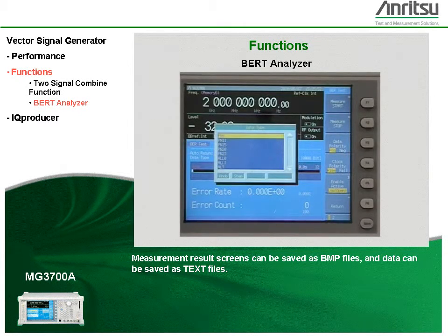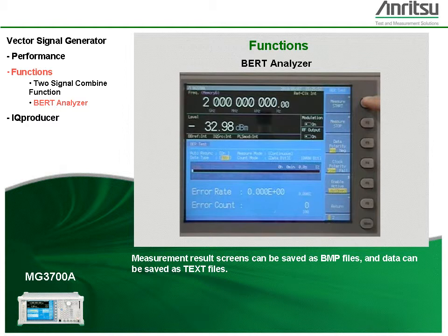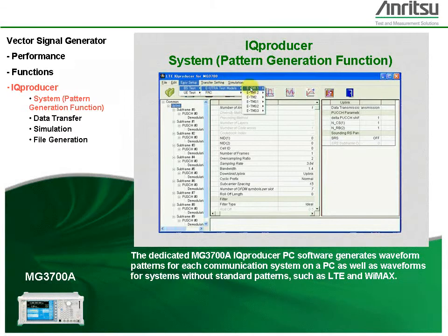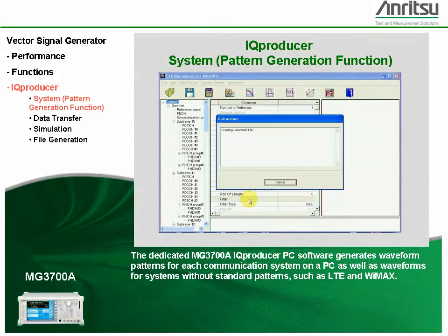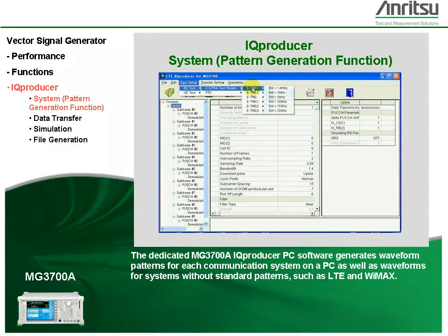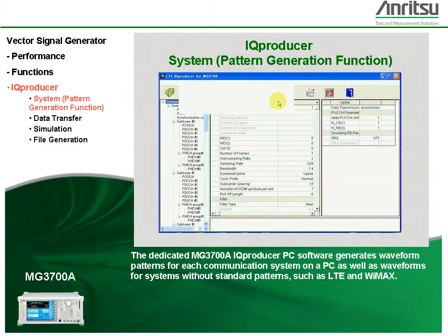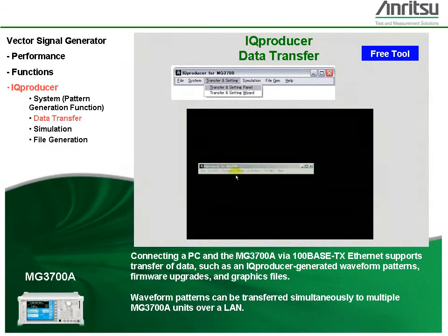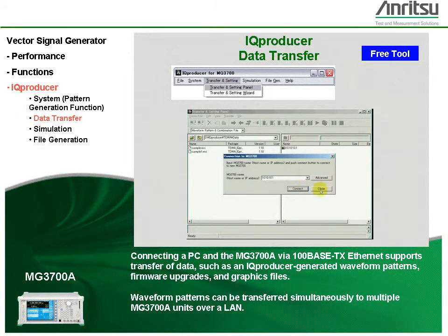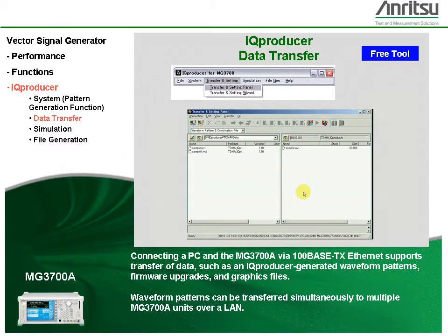Measurement result screens can be saved as BMP files and data can be saved as text files. The dedicated MG3700A IQ producer PC software generates waveform patterns for each communication system on a PC, as well as waveforms for systems without standard patterns such as LTE and WiMAX. Generated patterns can be used by installing the IQ producer license in the MG3700A. Connecting a PC to the MG3700A via an Ethernet interface supports transfer of data such as IQ producer generated waveform patterns, firmware upgrades, and graphics files.